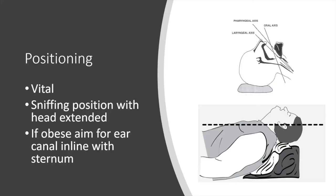Positioning is absolutely vital. We aim to use the sniffing-the-morning-air position in the non-obese patient, lining up three axes — oral, laryngeal, and pharyngeal — as you can see in the top picture, to allow a view of the vocal cords during laryngoscopy. In the obese patient, we use a different position, aiming for the auditory canal in line with the sternum, as you can see in the picture below.